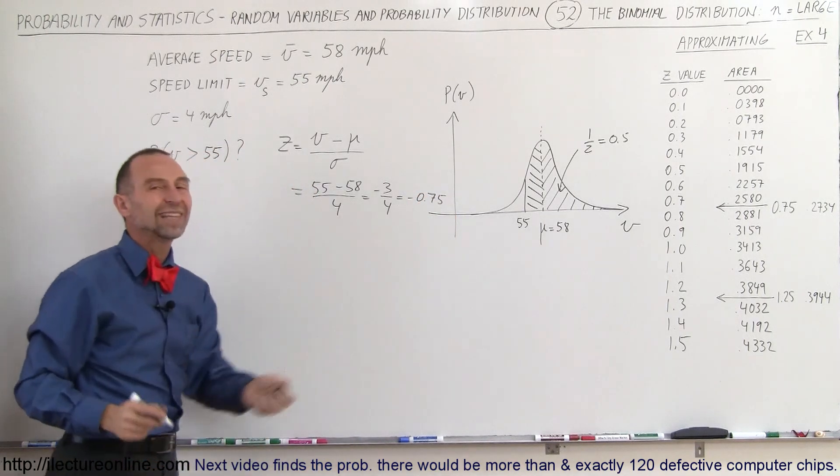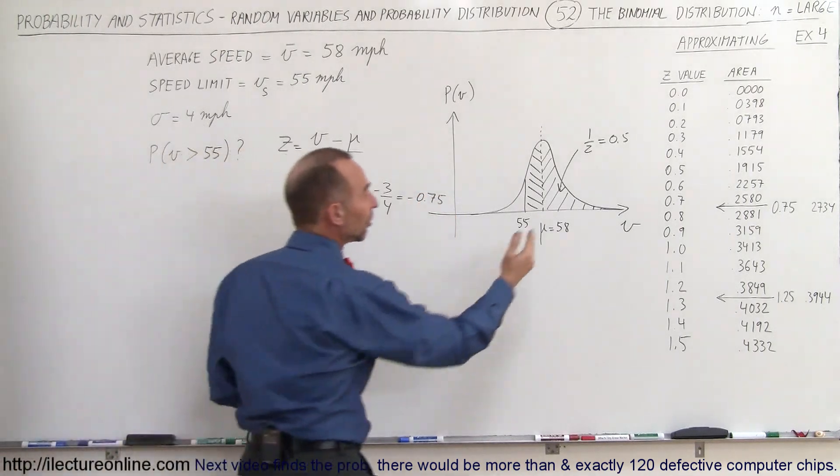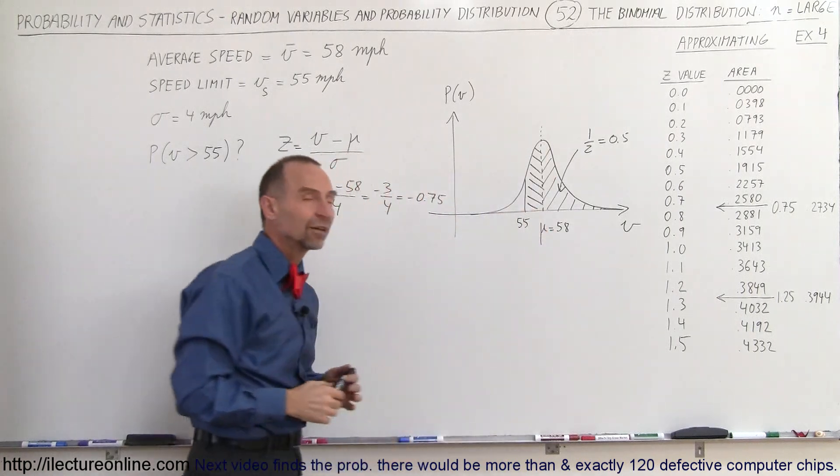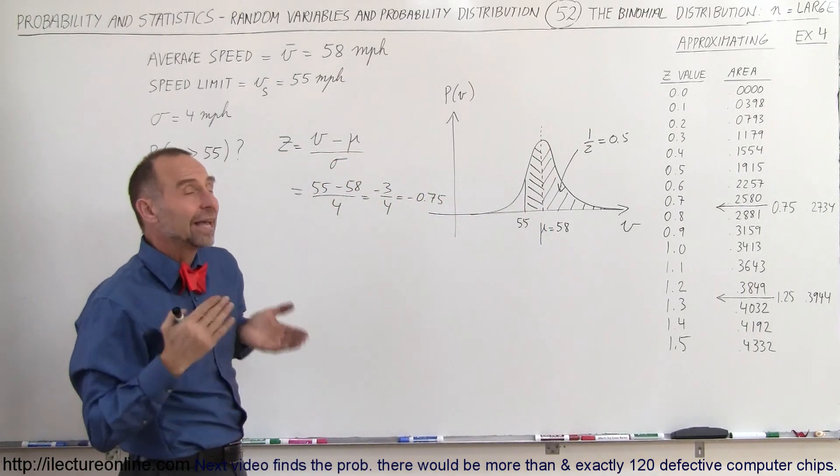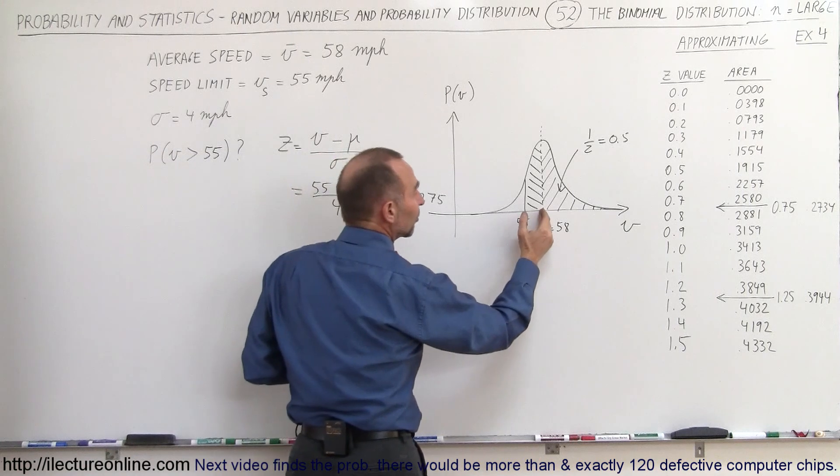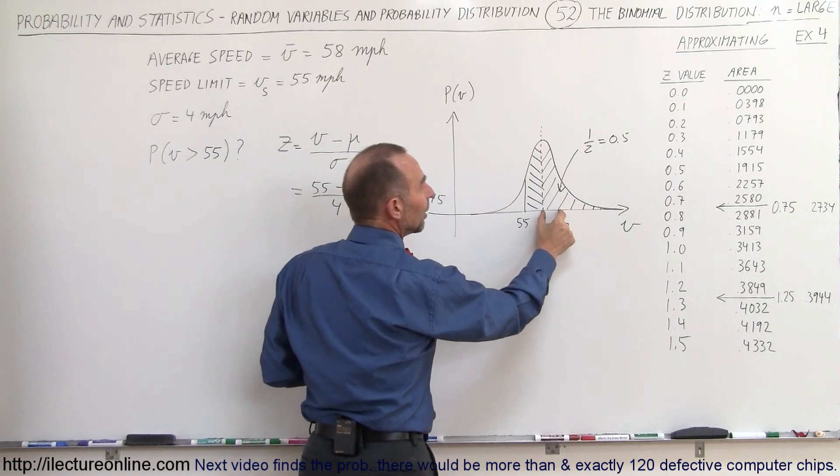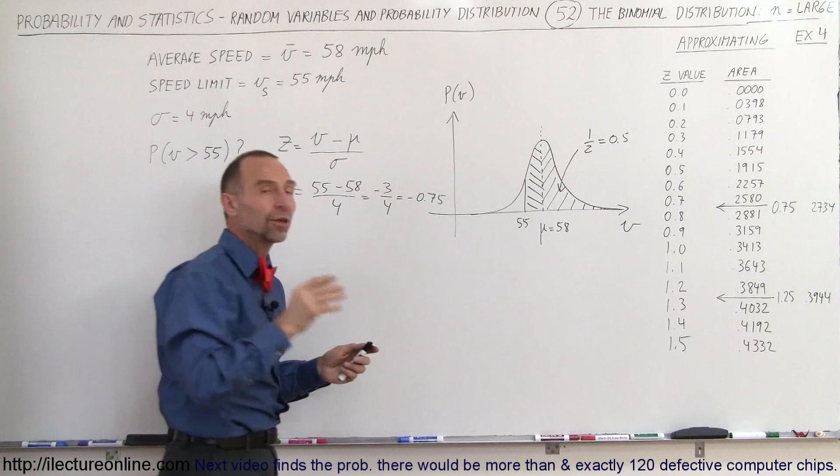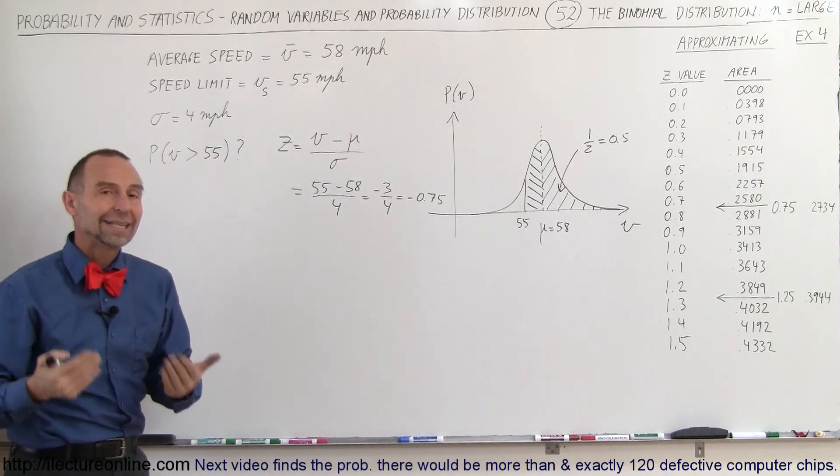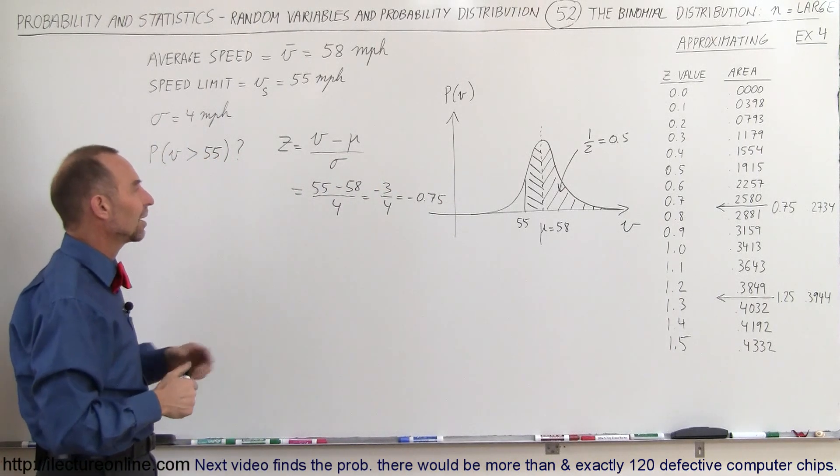Even though this is negative, which means we're to the left of the mean or expected value, we can find the area between 55 and the expected value simply by taking the equivalent positive area. So we look at the table for plus 0.75 instead of negative 0.75 for the Z value.